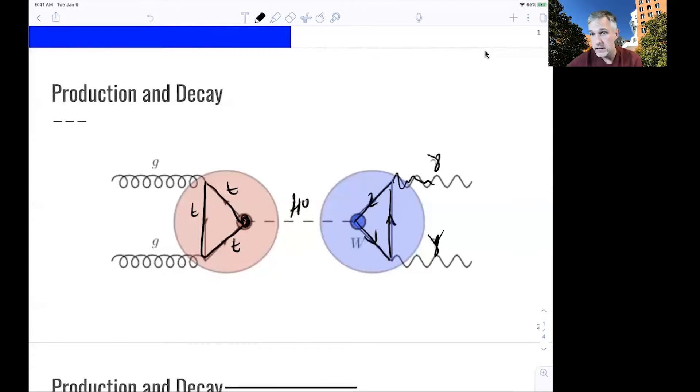While the gluons and photons are massless, we are able to produce the Higgs boson via collisions of two gluons and observe it via decay into photons. This is quite spectacular.